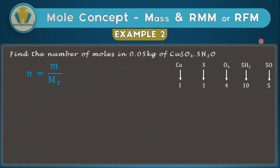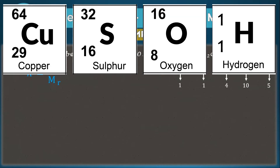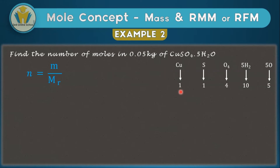Now we check the atomic masses from the periodic table for each atom. Whichever method you use, make sure you account for all atoms correctly — don't forget to add the four oxygens from sulfate and five from the water to get nine total. Write down the atomic masses: copper is 64, sulfur is 32, oxygen is 16, and hydrogen is 1. Multiply each by the number of atoms: one copper gives 64, one sulfur gives 32.